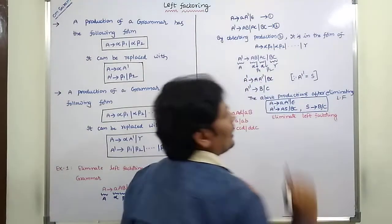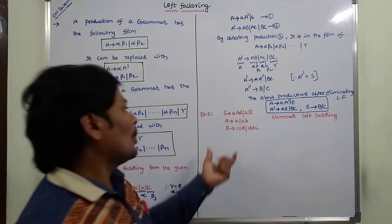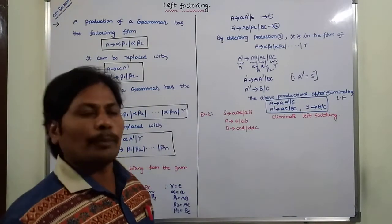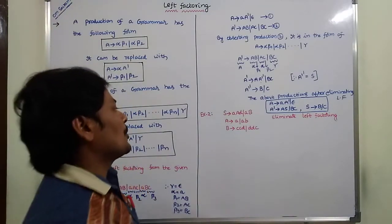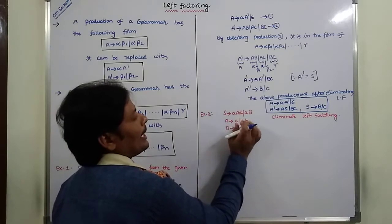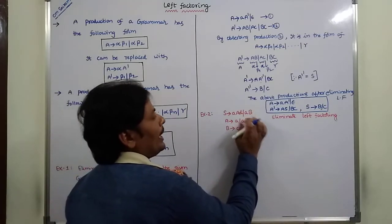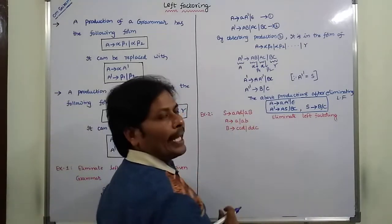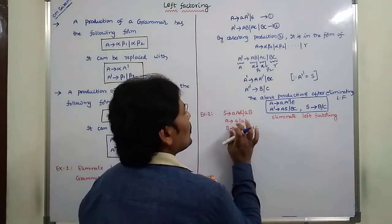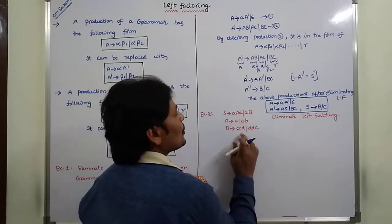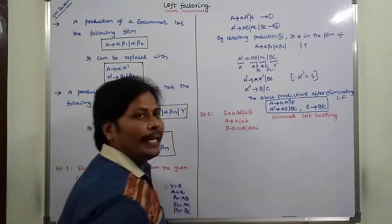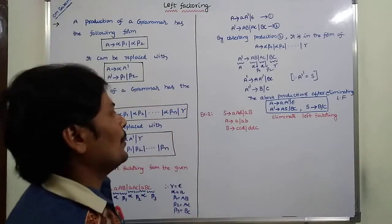Now go to the second example problem. The grammar is: S derives small-a capital-A capital-A small-d | small-a capital-B; A derives a | aB; B derives CCD | DDC.